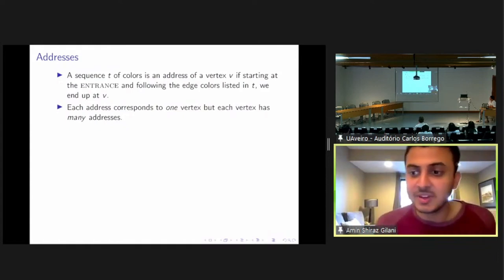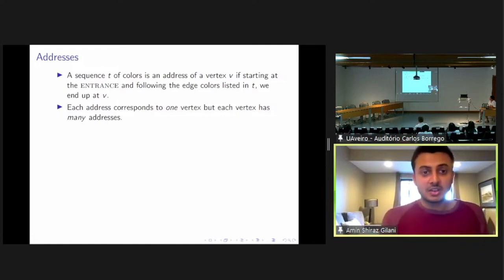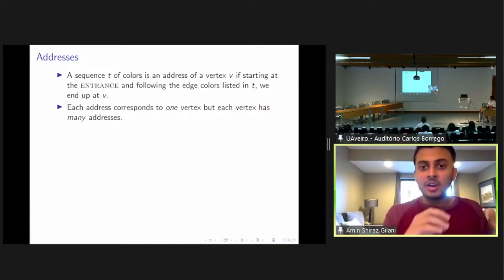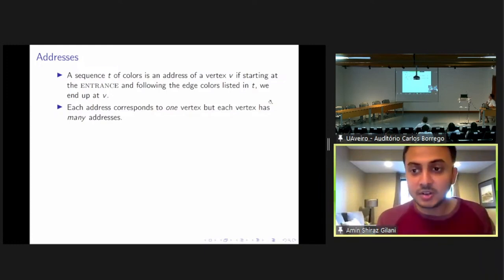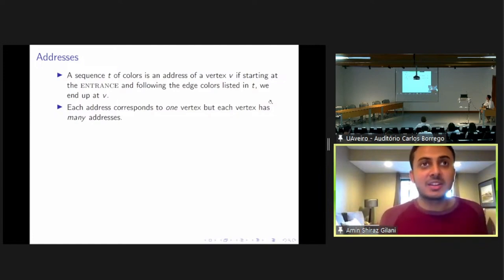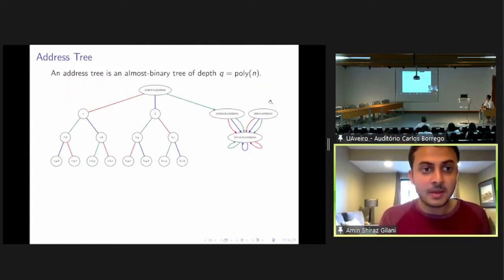We'll briefly describe some of the ideas in our proof. First, we look at the notion of addresses. An address is simply a sequence of colors. A sequence of colors can be called an address for a vertex if, starting at the entrance and following that sequence of colors, we end up at that particular vertex. Each address corresponds to only one vertex — you follow a sequence of colors and end up at one vertex — but each vertex may have many addresses, meaning there might be many paths from the entrance that go to that vertex.